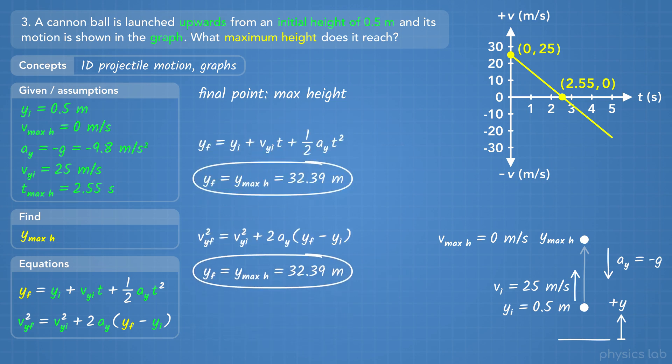In the first equation, we used the ball's initial height, initial velocity, the acceleration, and the time it took to reach the maximum height. But you might have noticed that with the second equation, we didn't need to use the time at all. So we could have solved this problem even if we weren't given the second point on the graph.